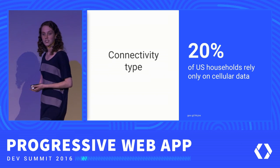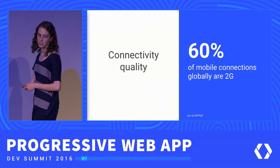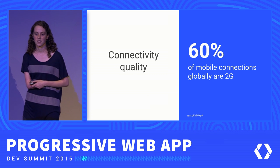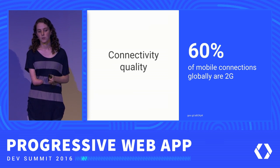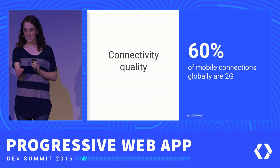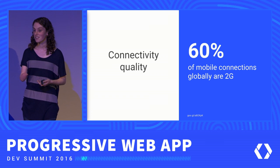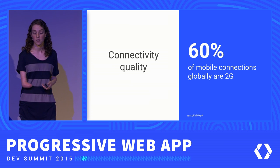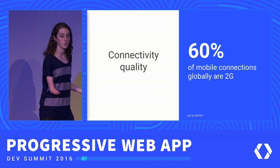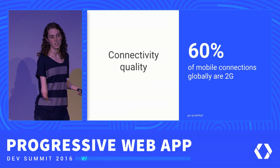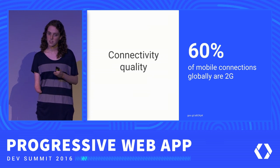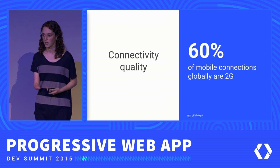The reliance on cellular networks as your primary way of interacting with the internet is increasing across the globe. This has some consequences when you're thinking about the conditions under which someone is trying to access your experience. Globally, about 60% of mobile connections are 2G — and this is just actual 2G connections, not counting 2G-like speeds, which can actually be even larger. In areas where people are coming online for the first time, we see this more pronounced at about two-thirds of connections.